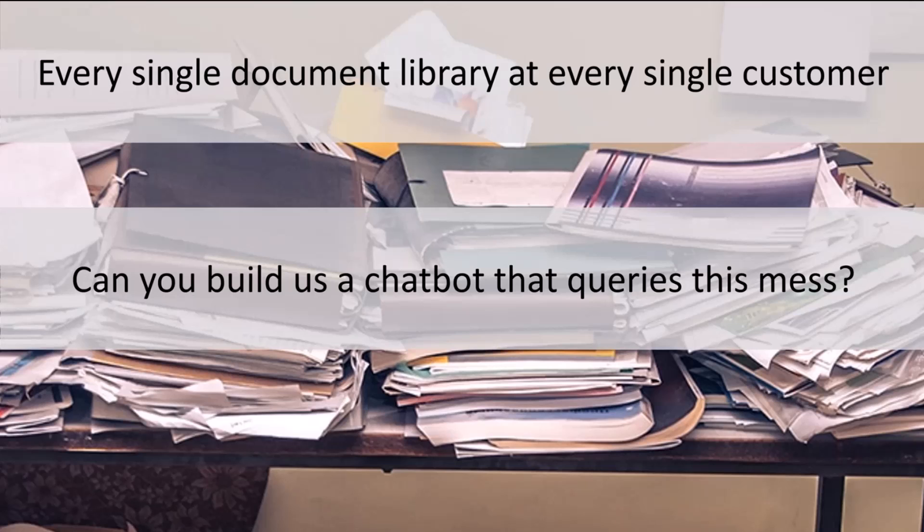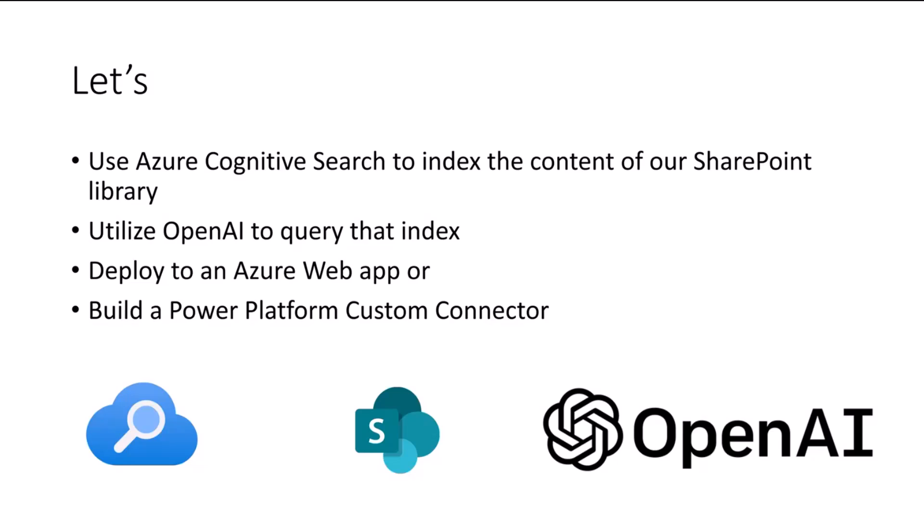It would still be better to tidy up first, but they never want that — they want the chatbot. So my approach is to use Azure Cognitive Search to index the content in the library, then utilize Azure OpenAI to query that index. Later we can either deploy this to an Azure Web App or build a Power Platform Custom Connector to use in Power Apps, Power Automate, or Power Virtual Agents.